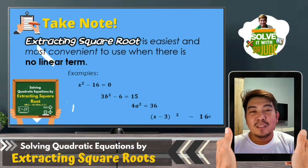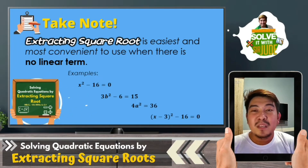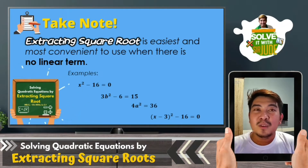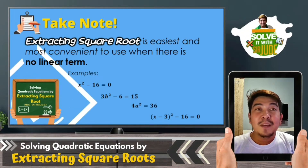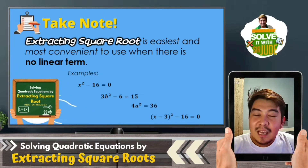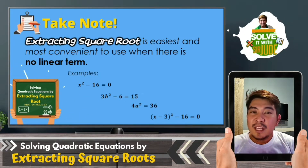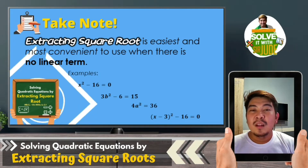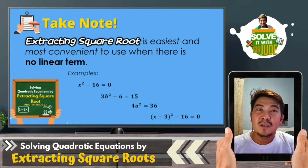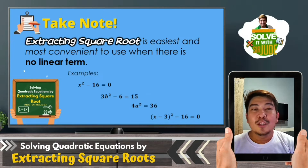For example: x squared minus 16 equals zero — it has no linear term. Same with 3b squared minus 6 equals 15, or a squared equals 36. A special case is the square of the binomial (x minus 3) minus 16 equals zero, which can also be solved using extracting square roots.